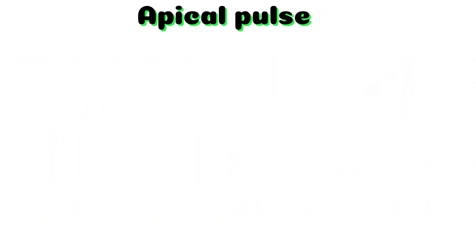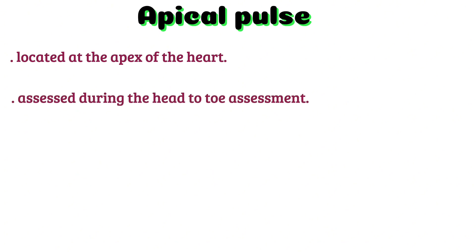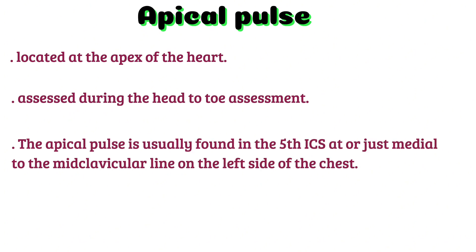Apical pulse: the apical pulse is slightly different from other pulse points because it is located at the apex of the heart rather than on an artery. This site is assessed during the head-to-toe assessment. The apical pulse is usually found in the fifth intercostal space at or just medial to the mid-clavicular line on the left side of the chest.